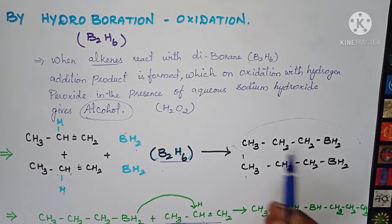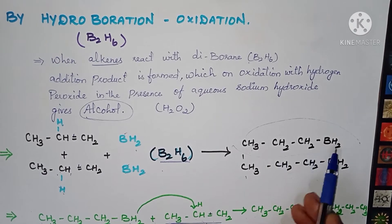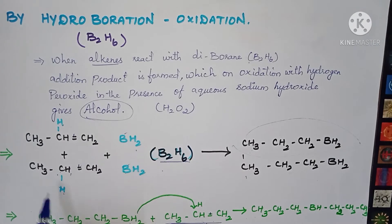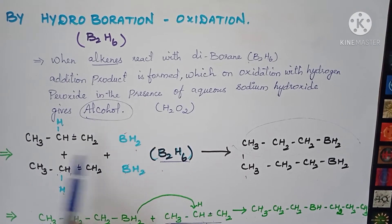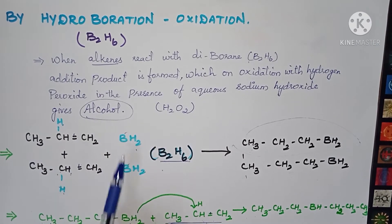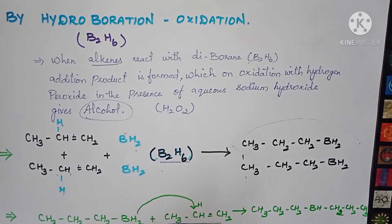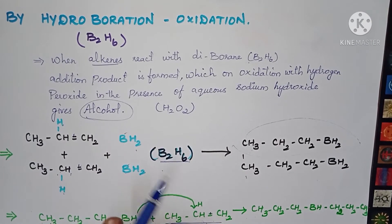The addition product you get is CH3-CH2-CH2-BH2. Here one BH2 is shown very clearly. Through that first addition step you got the product, and another hydrogen from BH2 joins as well.